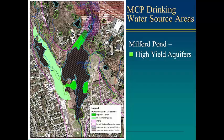This image illustrates the interconnectedness of our wetland and groundwater systems to our public water supply. The bright and light green regions in this image show the location of high-yield and medium-yield aquifers that are part of the MCP drinking water source areas. The Zone 2 wellhead protection area, shown here in pink outline, is determined by hydrogeologic modeling and approved by MassDEP's drinking water program as a protected recharge area around a public water supply. Milford Pond and surrounding river systems are within Zone 2 and as such are direct sources of groundwater recharge and surface water withdrawals for public drinking.